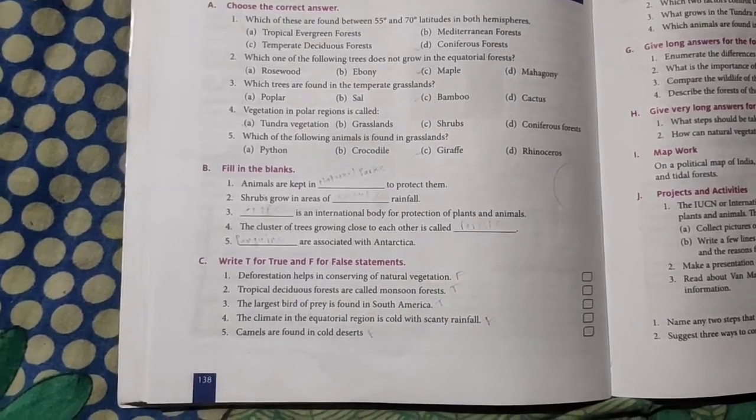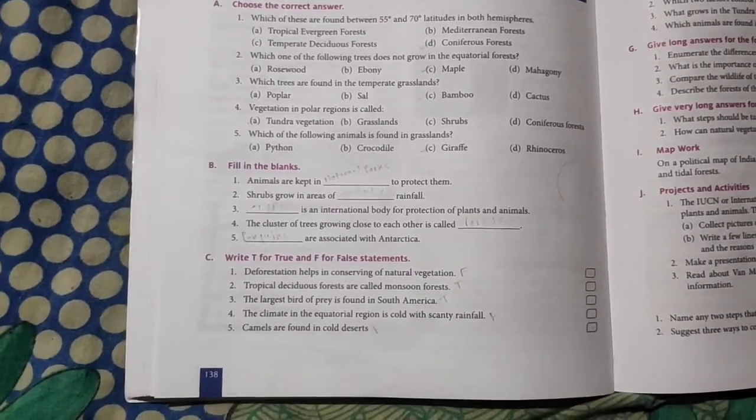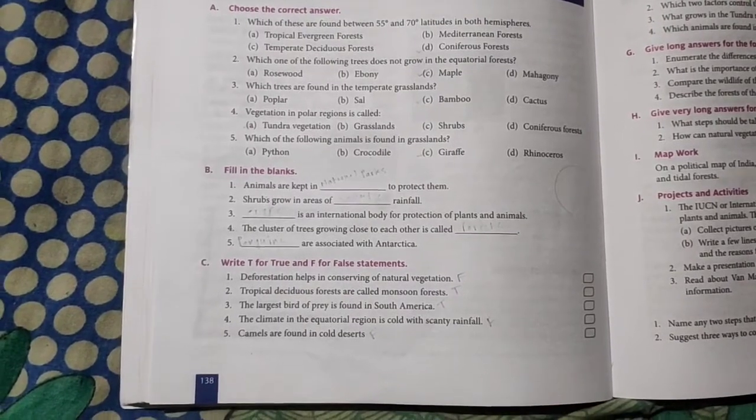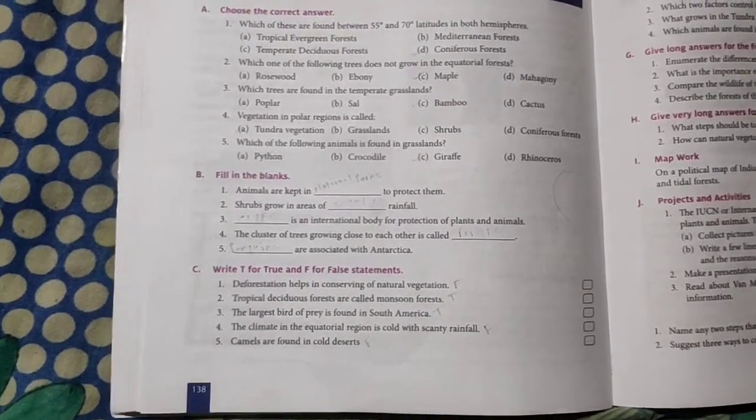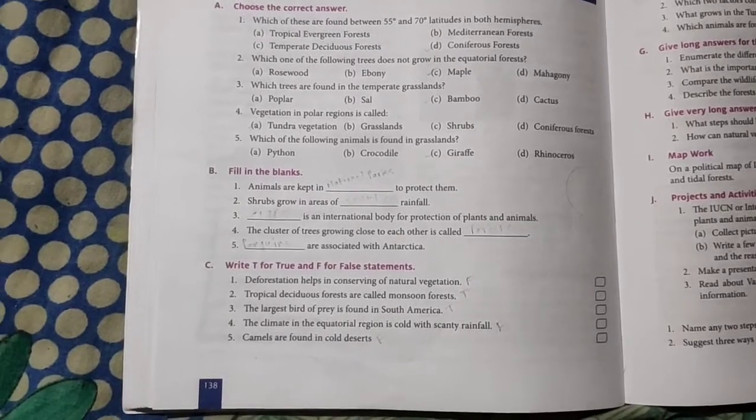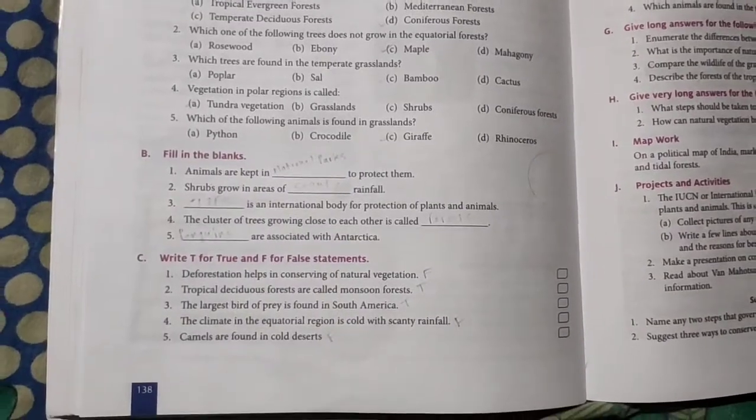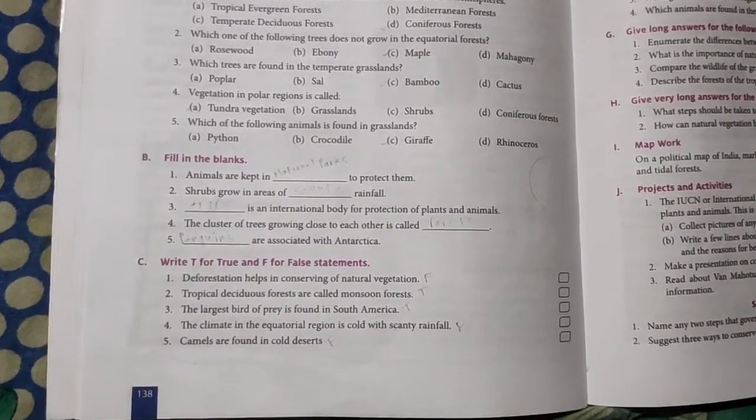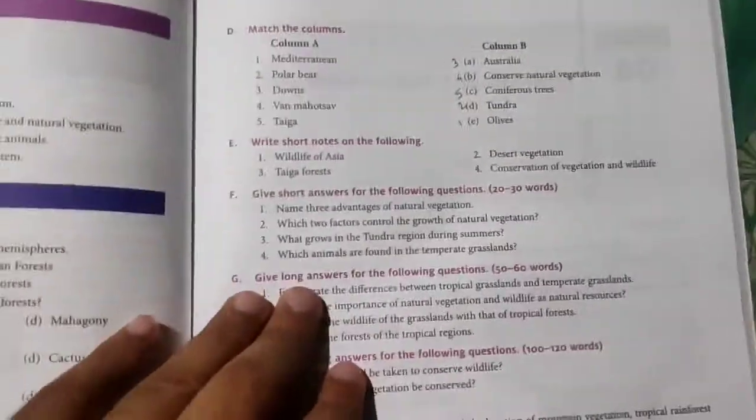Fifth: camels are found in cold deserts. No, camels are found in hot deserts like Rajasthan, like Sahara, etc.